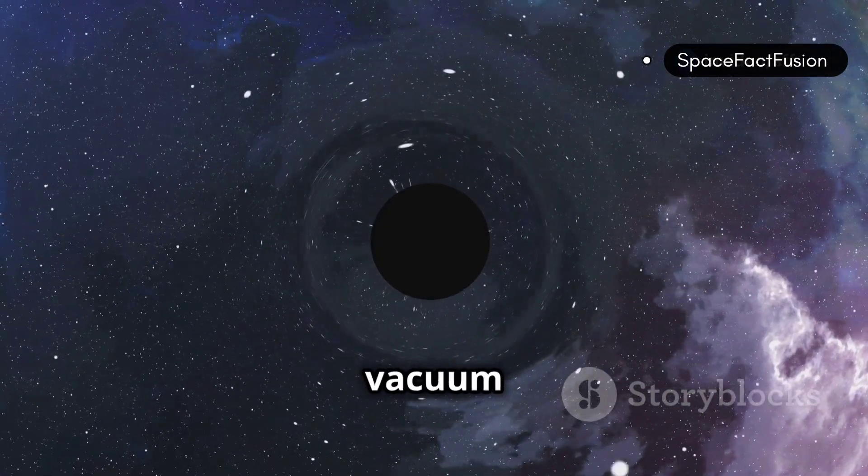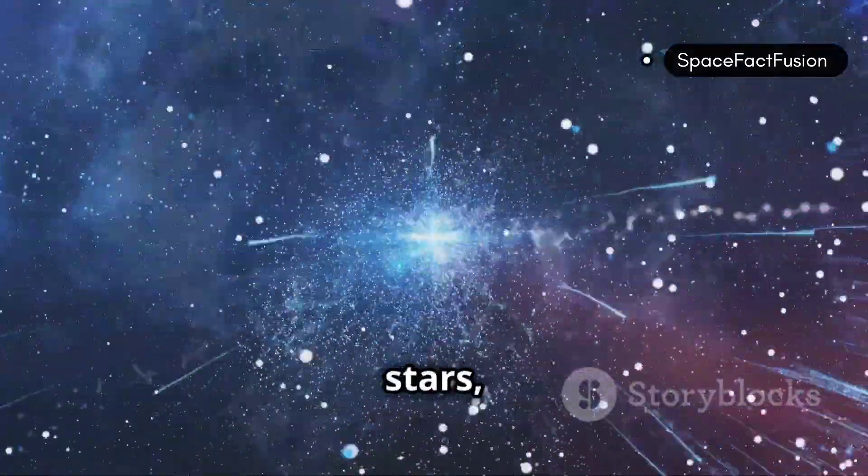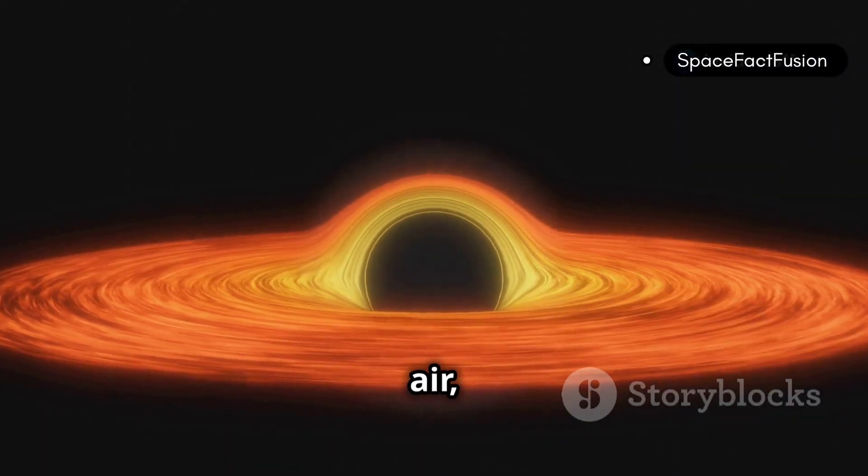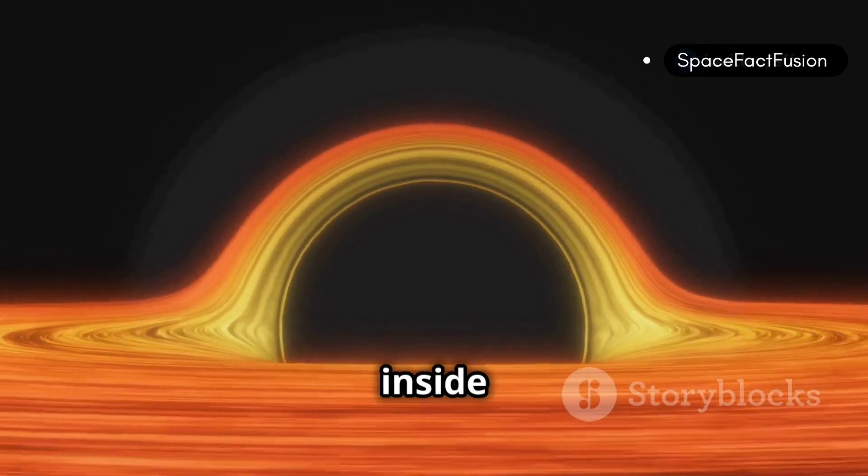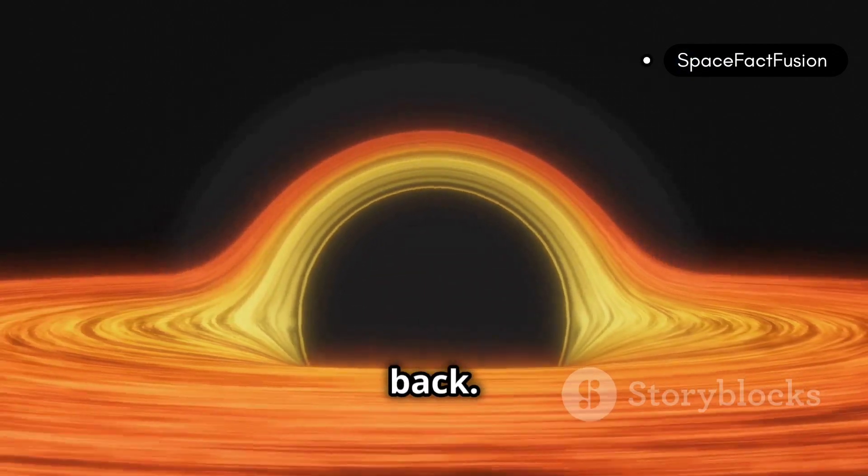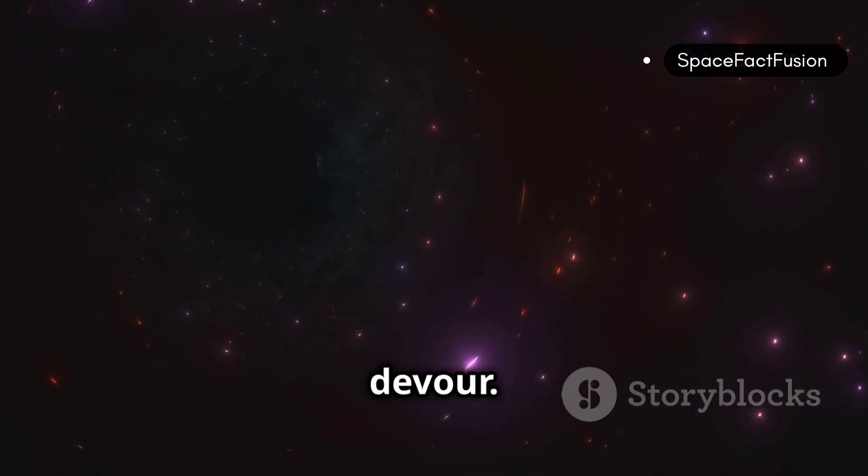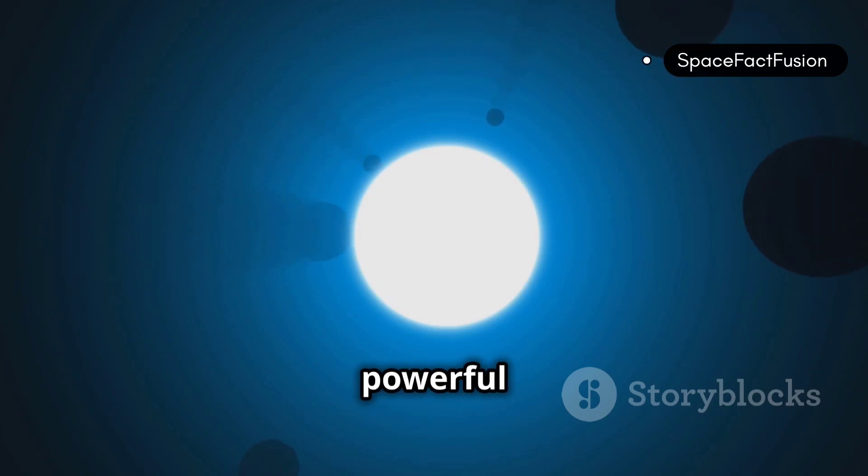Imagine a giant cosmic vacuum cleaner that sucks up everything in its path. This vacuum cleaner is so powerful that it pulls in stars, planets, and even light. This is a black hole. But instead of air, it devours light and matter, trapping them inside forever. Once an object goes inside a black hole, it can never come back. But don't worry, black holes aren't roaming the universe like cosmic predators actively hunting planets to devour. They keep to themselves unless an object comes near them. These are interesting things that are governed by the laws of physics, just like everything else in space. Black holes can teach us a lot about the universe, and they also show us how powerful gravity can be.